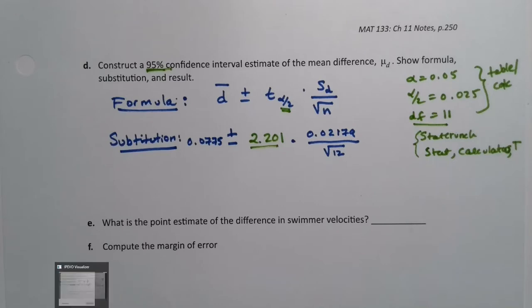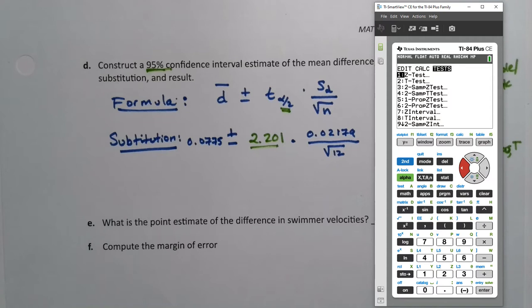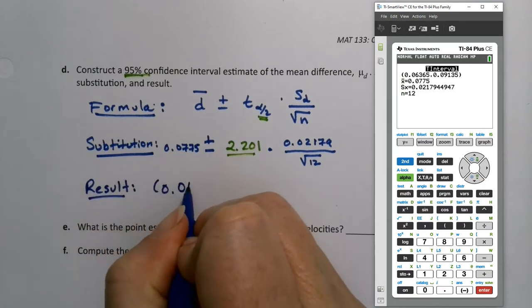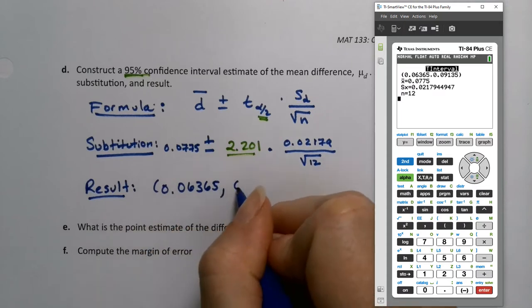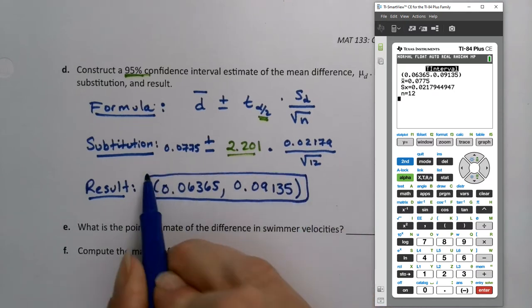If I grab the calculator, I can get the same results from stats, tests, T interval, which is number eight. I'm going to do it from data. My data is in L3, with 95% confidence, or 0.95. I will get the same result that I got from StatCrunch, which is 0.06365 and 0.09135.